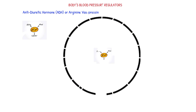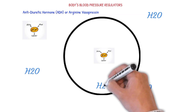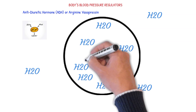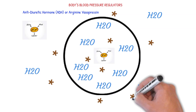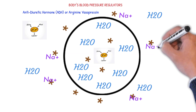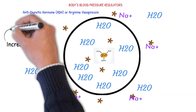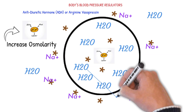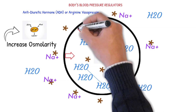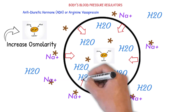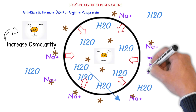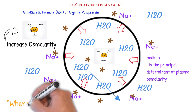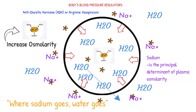What would happen if there is less water outside the cell? If there is less water outside the cell, there are more solutes. The majority of solutes outside the cell is sodium. The presence of more solutes would increase the osmotic concentration of the extracellular compartment, causing water to move out of the cell, and the cell will shrink and become dehydrated. Since the majority of sodium is present extracellularly, sodium is the principal determinant of plasma osmolarity. The normal blood sodium level is between 135 to 145 millimoles per liter. That's why we have this rule: where sodium goes, water goes.